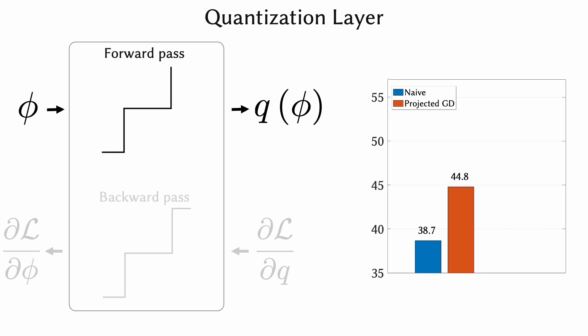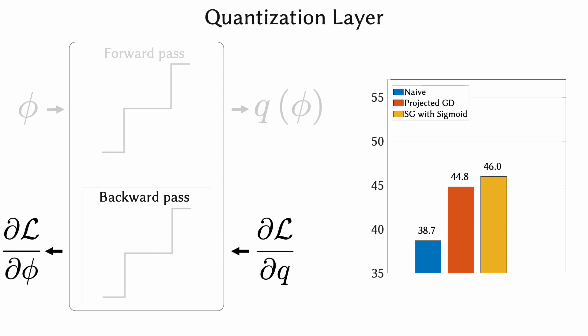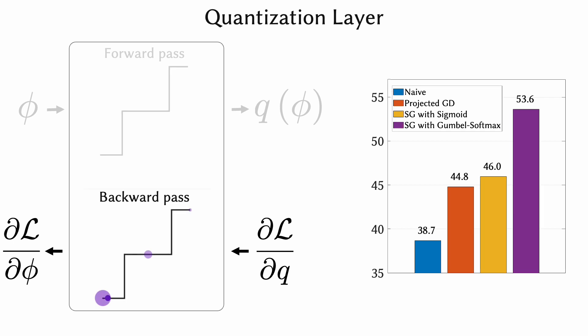A better approach is to quantize the forward pass and approximate the gradients with a differentiable surrogate function for back-propagation. Here, we propose to treat the quantized SLM values as a categorical distribution with Gumbel noise for the surrogate function. With this approach, we demonstrate improved performance both in simulation and in experiments.